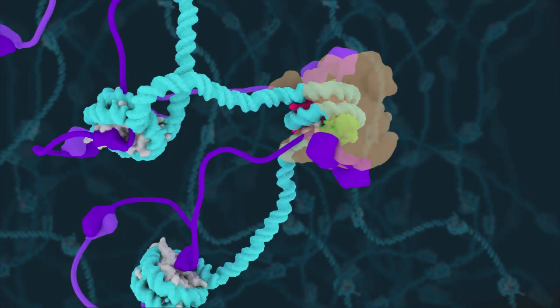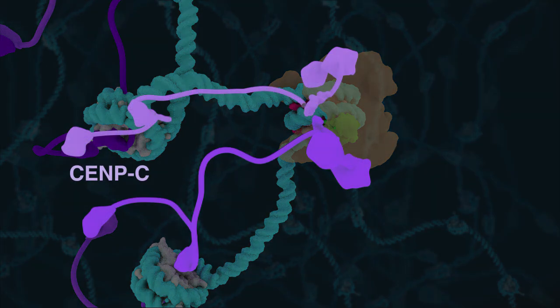Prior to mitosis, chromatin is in a relatively loose conformation and CENP-A nucleosomes are directly bound by two copies each of the non-histone centromere proteins CENP-C in purple and CENP-N in green.